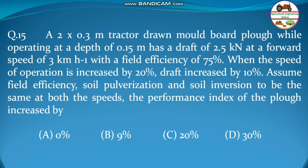Next question: a 2 × 0.3 m tractor-drawn moldboard plow operating at a depth of 0.15 m has a draft of 2.5 kN at a forward speed of 3 km/h with field efficiency of 75%. When speed is increased by 20% and draft increases by 10%, by what percentage does the Performance Index increase — 0, 9, 20, or 30%? Only the changing quantities — speed and draft — are important here.